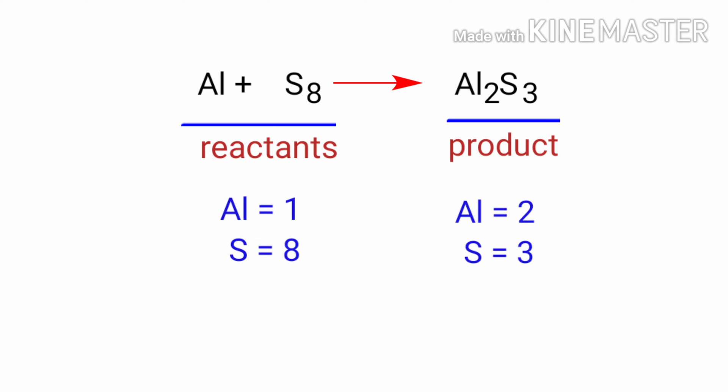On the reactants side, there are one aluminum atom and eight sulfur atoms present. On the products side, there are two aluminum atoms and three sulfur atoms present. The number of atoms are not balanced on both sides.